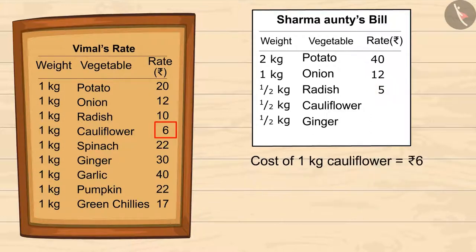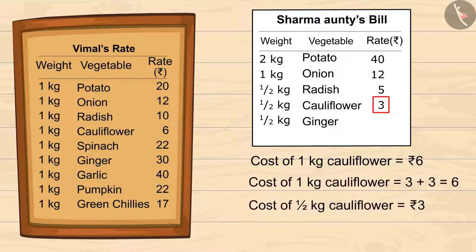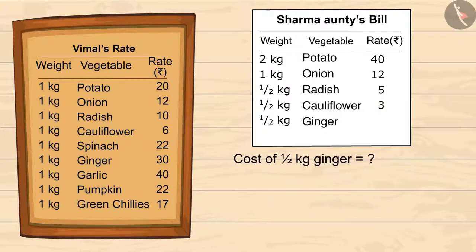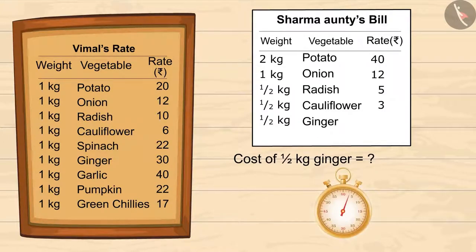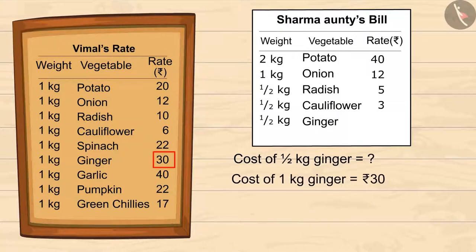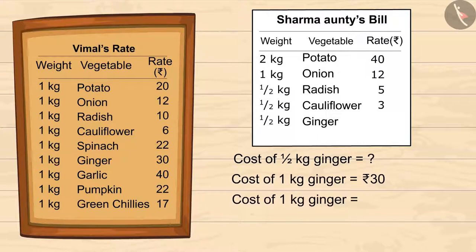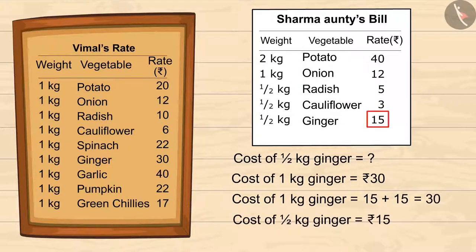Similarly, if 1 kg cauliflower costs 6 rupees, half of it will cost 3 rupees. Now, we are left with half a kg ginger, which means half the price of 1 kg. 1 kg ginger costs 30 rupees, so half a kg ginger will cost half of 30 rupees. On dividing 30 into 2 equal halves, we get 15. So half a kg ginger will cost 15 rupees.